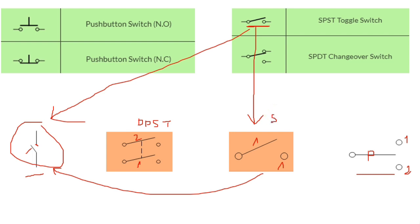This is the single pole single throw (SPST) switch — a single pole and single throw. And for this one we have SPDT: single pole double throw, because we have just one pole and two states — state number one and state number two.